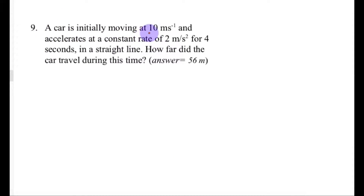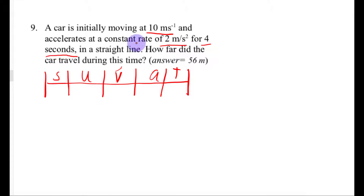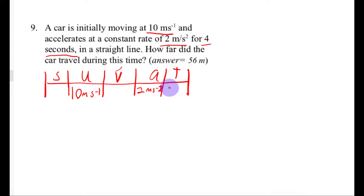Number nine: a car is initially moving at 10 meters per second and accelerates at a constant rate of 2 meters per second squared for 4 seconds in a straight line. How far did the car travel during that time? The starting velocity is 10 meters per second, acceleration is 2 meters per second squared, and time is 4 seconds.